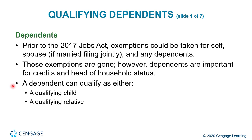Prior to the 2017 Tax Cuts and Jobs Act, exemptions could be taken for yourself, your spouse, and any dependents. These exemptions are now gone. However, dependents remain important for credits and head of household status. A dependent can qualify as either a qualifying child or a qualifying relative.